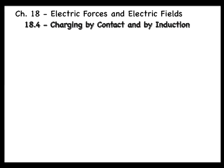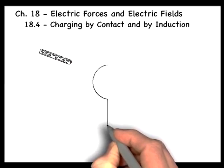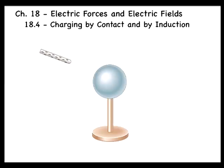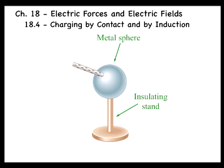Consider a metallic sphere on an insulating stand. When a negatively charged ebonite rod is rubbed on the metal sphere, some of the excess electrons from the rod are transferred to it.